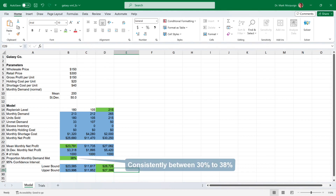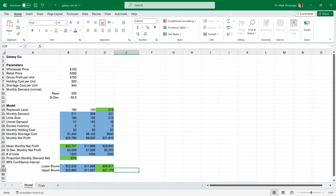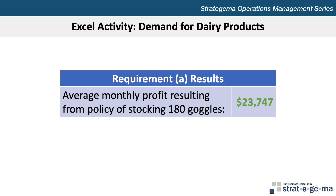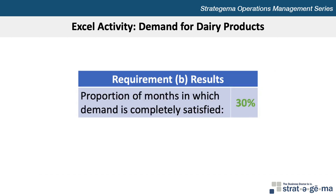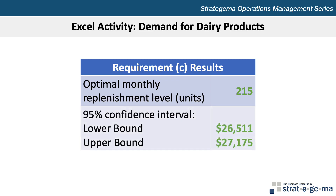And now we're finished. If you press F9 to generate different results, you'll see the numbers change, but the proportion in cell B26 consistently ranges between 30% and 38%, and the replenishment level of 215 always produces the highest monthly net profit. For Requirement A, the average monthly net profit for stocking 180 goggles is approximately $23,747. For Requirement B, the proportion of months in which demand is completely satisfied is 30%. For Requirement C, the replenishment level that maximizes profitability is 215 units, with a 95% confidence interval lower bound of $26,511 and upper bound of $27,175.